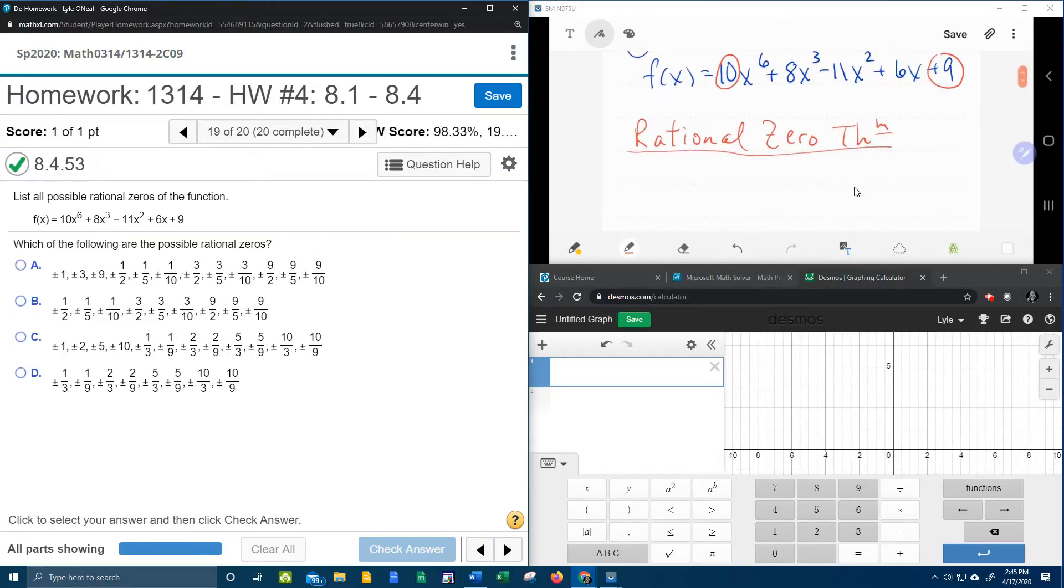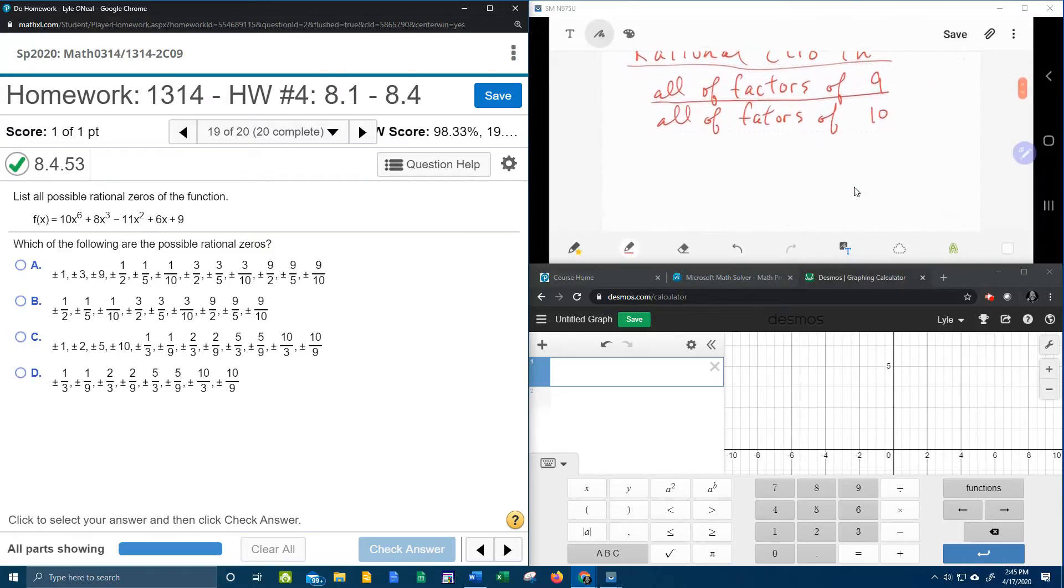So here's what we need. We need all of the factors of the constant, which is 9, divided by all of the factors of the lead coefficient, which is 10. And then we're going to look at every possible combination of those. All right, so what are the factors of 9? Well, plus or minus 1. 1 goes into 9. We know 3 goes into 9. And 9 goes into 9. So those are the only factors of 9.